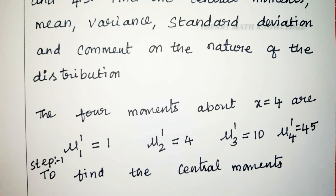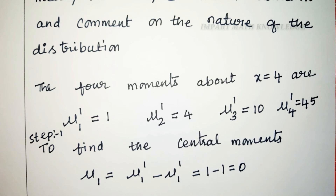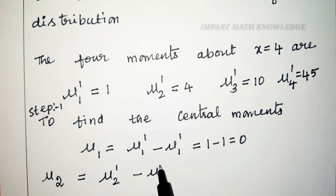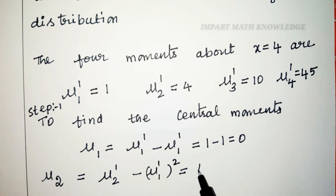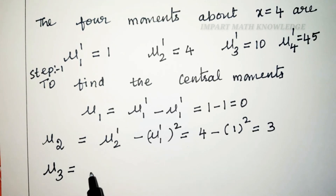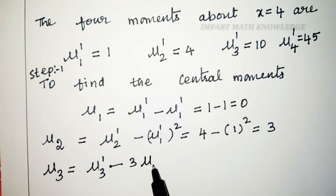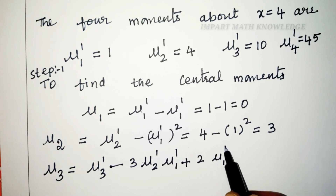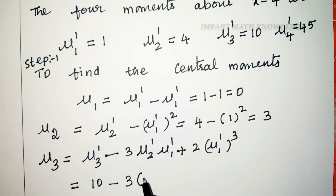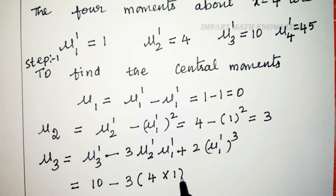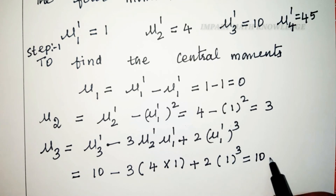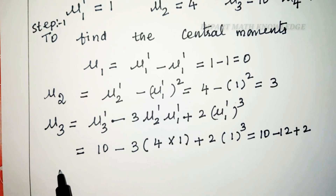Step 1: find the central moments. Mu1 is always 0. Mu2 equals mu2 dash minus mu1 dash squared: 4 minus 1 squared equals 3, so mu2 equals 3. Mu3 equals mu3 dash minus 3·mu2 dash·mu1 dash plus 2·mu1 dash cubed: 10 minus 3×4×1 plus 2×1 cubed equals 10 minus 12 plus 2 equals 0, so mu3 equals 0.